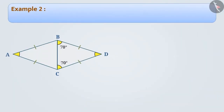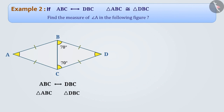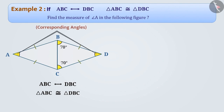Example 2. If triangle ABC is congruent to triangle DBC and ABC is matching with DBC, find the measure of angle A in the following figure. Here, ABC is matching with DBC and triangle ABC is congruent to triangle DBC under this correspondence. Here, angle A and angle D are the corresponding angles of congruent triangles ABC and DBC. Can you tell what the relationship between these angles will be?